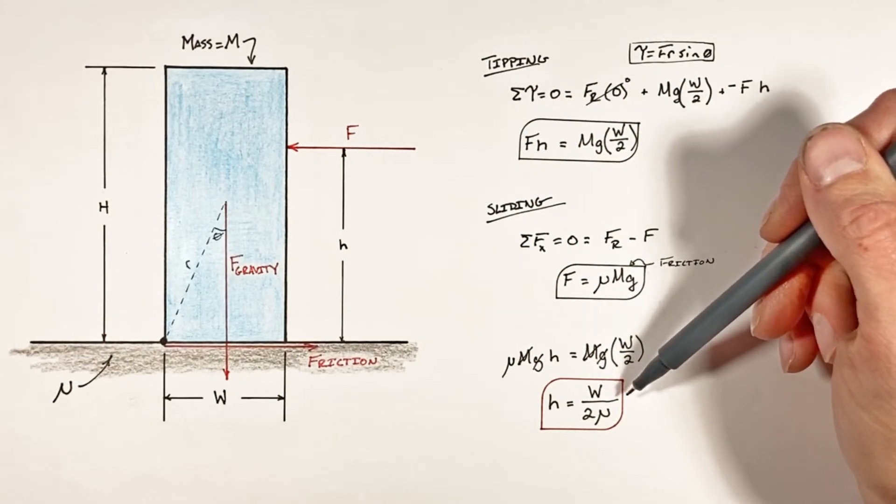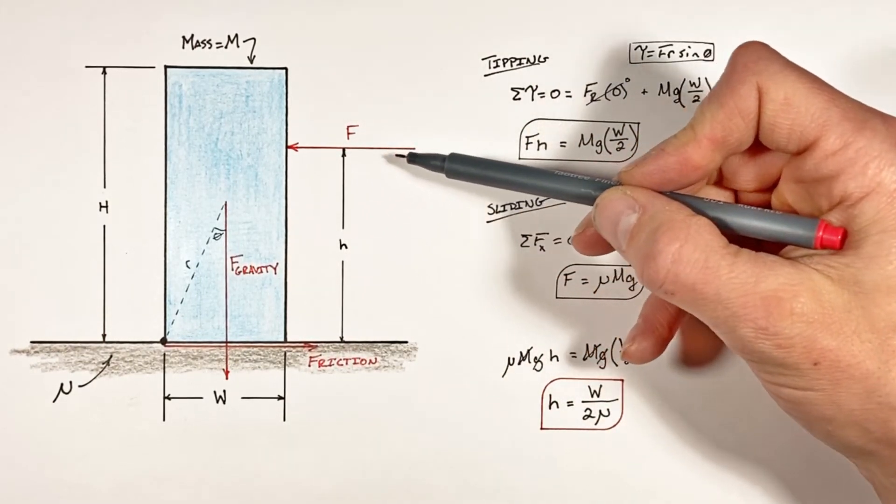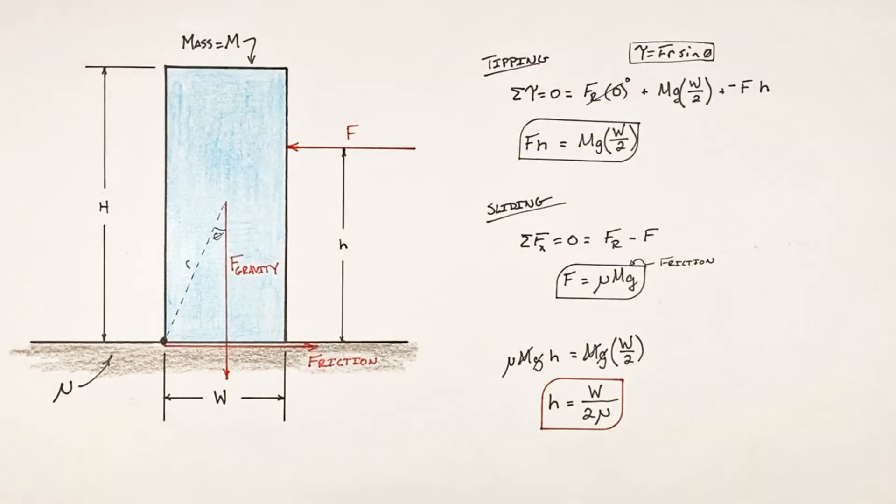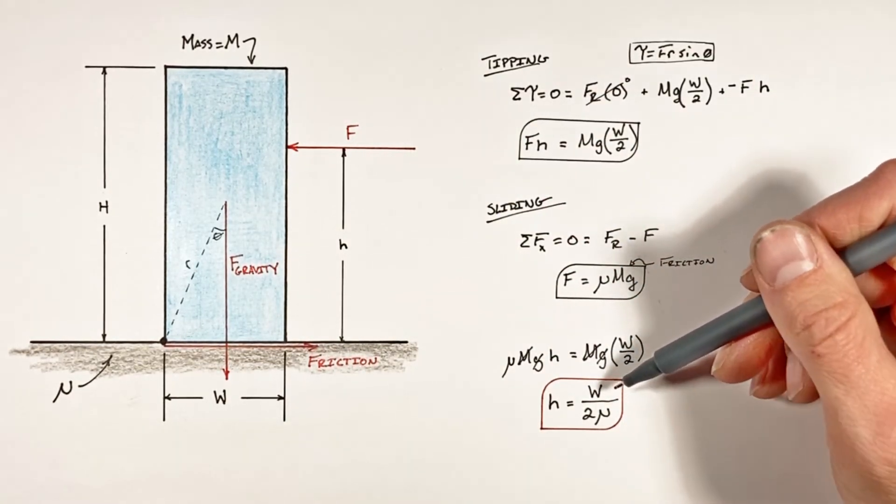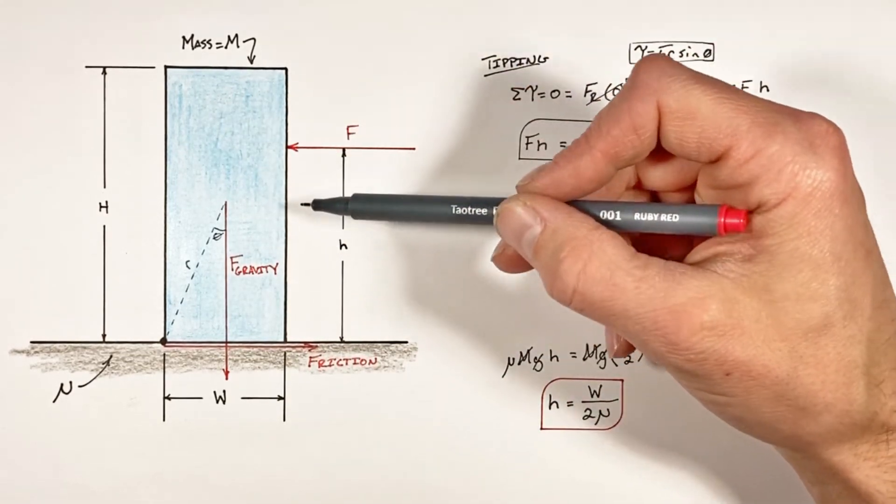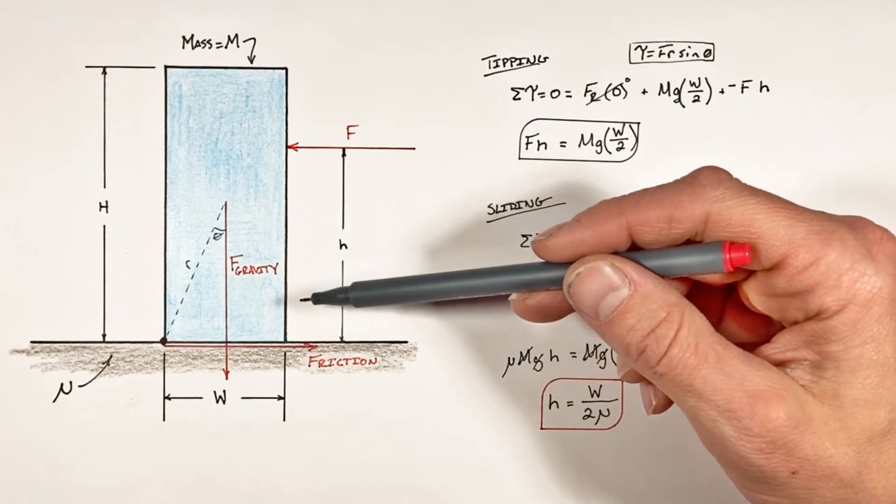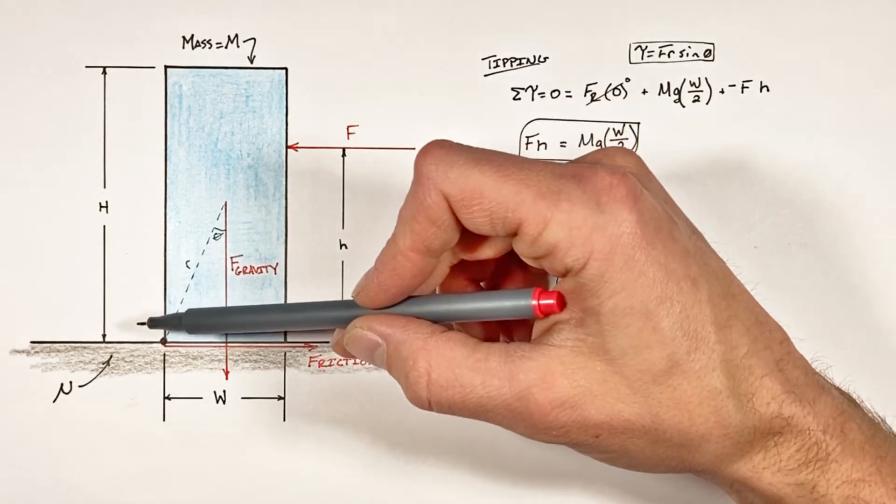Which tells us the height right at this transition when the block goes from sliding against the ground to tipping. Now there's a couple of important things here to talk about. The first is the mass of the block is absolutely irrelevant as to whether or not the block is going to tip or slide. Additionally, the height of the block is irrelevant, so long as the height of the block is greater than this value h which we solved over here.